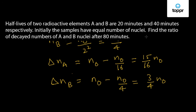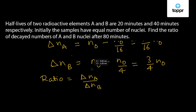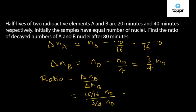Now we find the ratio of decayed numbers of A and B nuclei after 80 minutes. The ratio delta N_A by delta N_B equals 15 by 16 N0 divided by 3 by 4 N0, which equals 5 by 4. So the ratio of the decayed numbers of A and B nuclei after 80 minutes is 5 by 4.